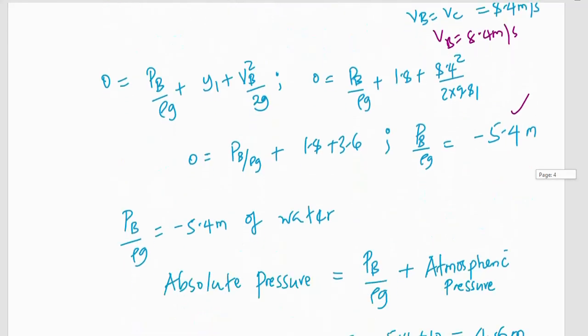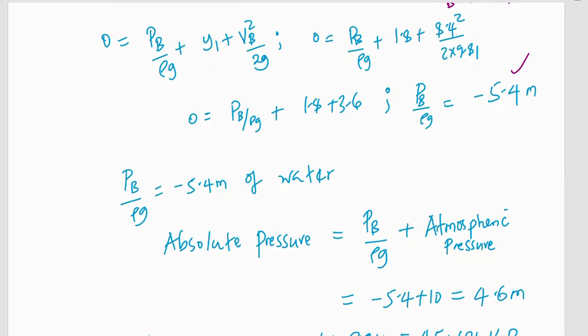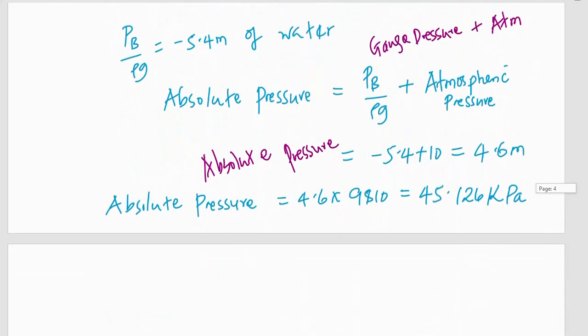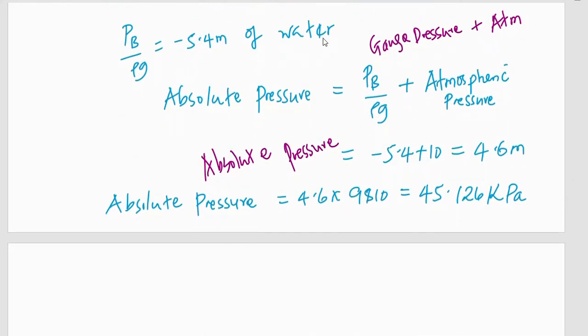Since we know the absolute pressure is equal to the gauge pressure plus atmospheric pressure. Remember, what we use in the Bernoulli's equation is gauge pressure. So, the gauge pressure is given, is calculated as negative 5.4. Then, atmospheric pressure is given as 10. So, it means our absolute pressure, absolute pressure will equal to negative 5.4 plus 10, which gives 4.6 meters of water.